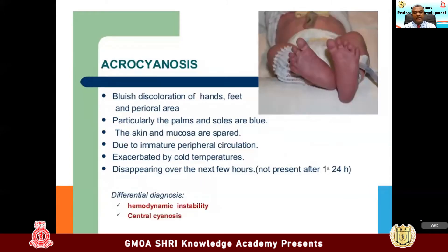We are sometimes worried about acrocyanosis — peripheral cyanosis. Peripheral cyanosis can be due to hypothermia or low environmental temperature. Reassure the parents — this is peripheral cyanosis, which happens in the peripheries of the legs and upper lips. But always check the tongue. If the tongue is also cyanosed, you have to be really worried because it's a sinister sign — it might be central cyanosis. But if the tongue is pink and the peripheries are cyanosed, you don't have to worry. The local reason may be hypothermia or exposure to cold or air conditioning. Always examine the tongue.